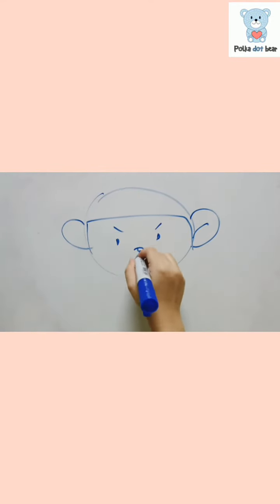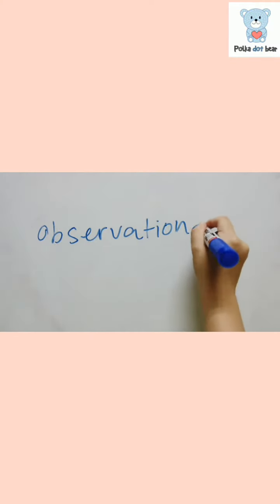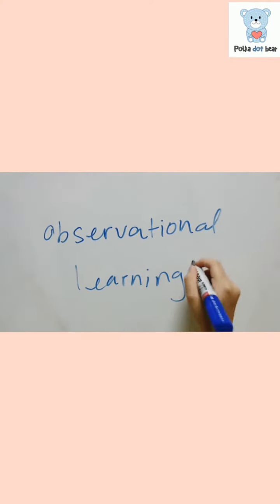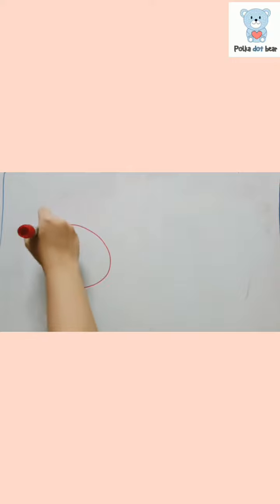Monkey see, monkey do. Many have heard of this phrase, but some don't. Today we are going to talk about observational learning. What is observational learning anyways? Observational learning is when one learns through observing the actions of another individual.